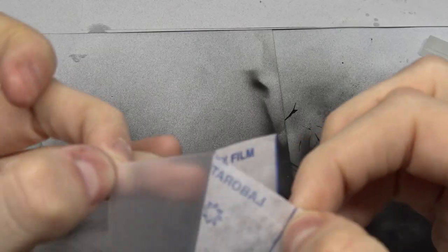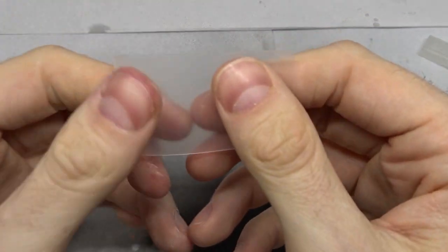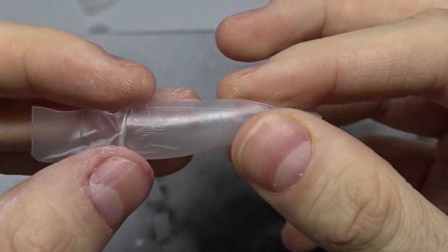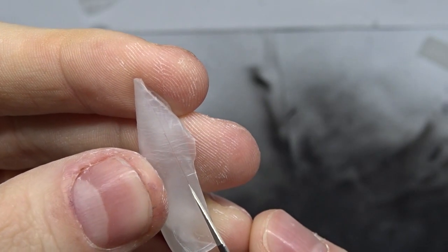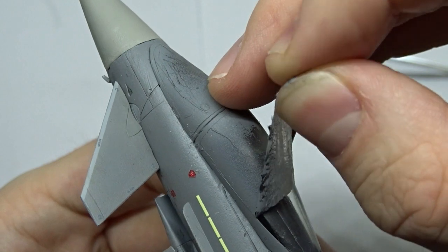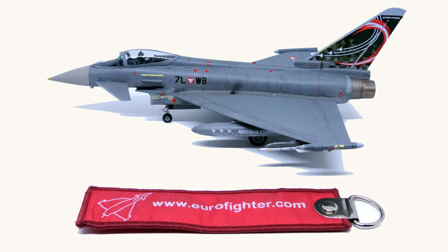Another method I tried in the past is Parafilm M. It's a film that you stretch over the canopy before cutting it. I used it on my Eurofighter Typhoon and it worked well. But cutting directly on the clear part is quite risky. Nonetheless this is a good option.